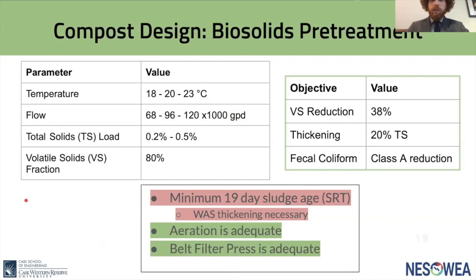To ensure the compost facility will be successful, we evaluated the biosolids pre-treatment process — particularly the aerobic digesters — to confirm that solids produced are appropriate for composting and safe for handling. On the left is a table of digester operation parameters including seasonal temperature ranges, a peak flow of 120,000 gallons per day, and a range of total solids loading. We assumed a volatile solids fraction of 80%, typical for waste-activated sludge. Our objectives for the final biosolids product are: reducing volatile solids by at least 38% for odor control, thickening to 20% total solids, and meeting class A biosolids standards for fecal coliform.